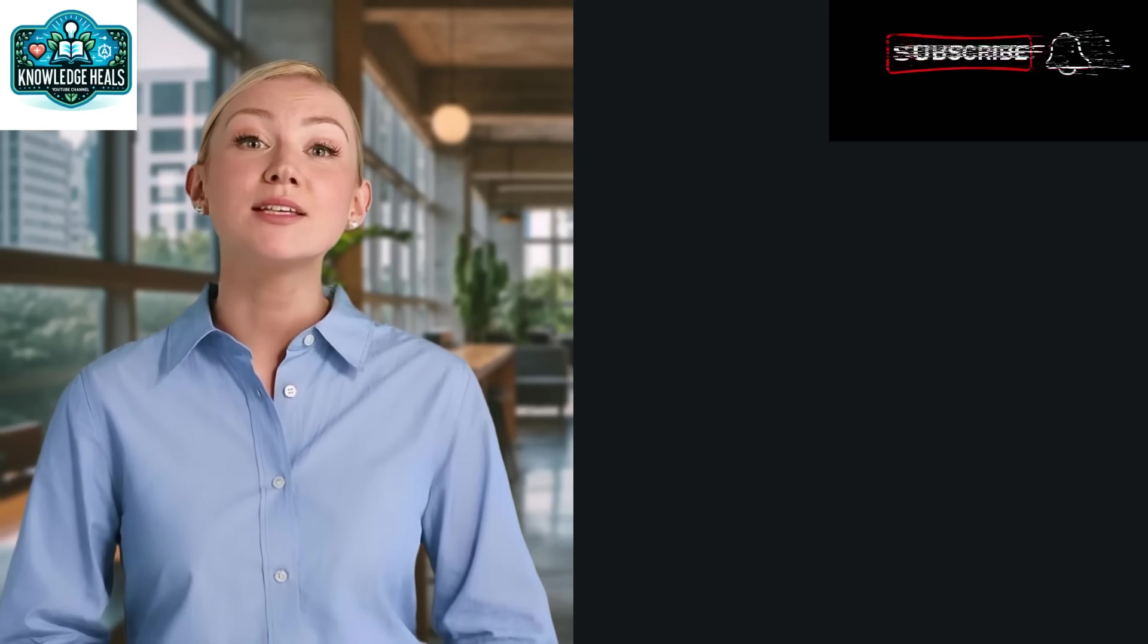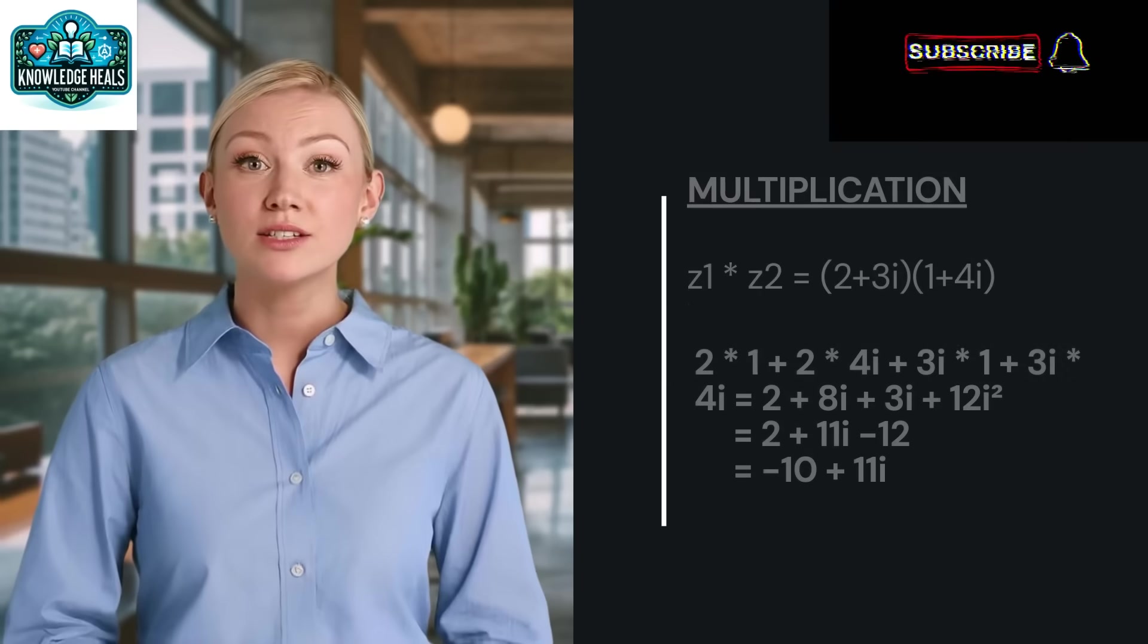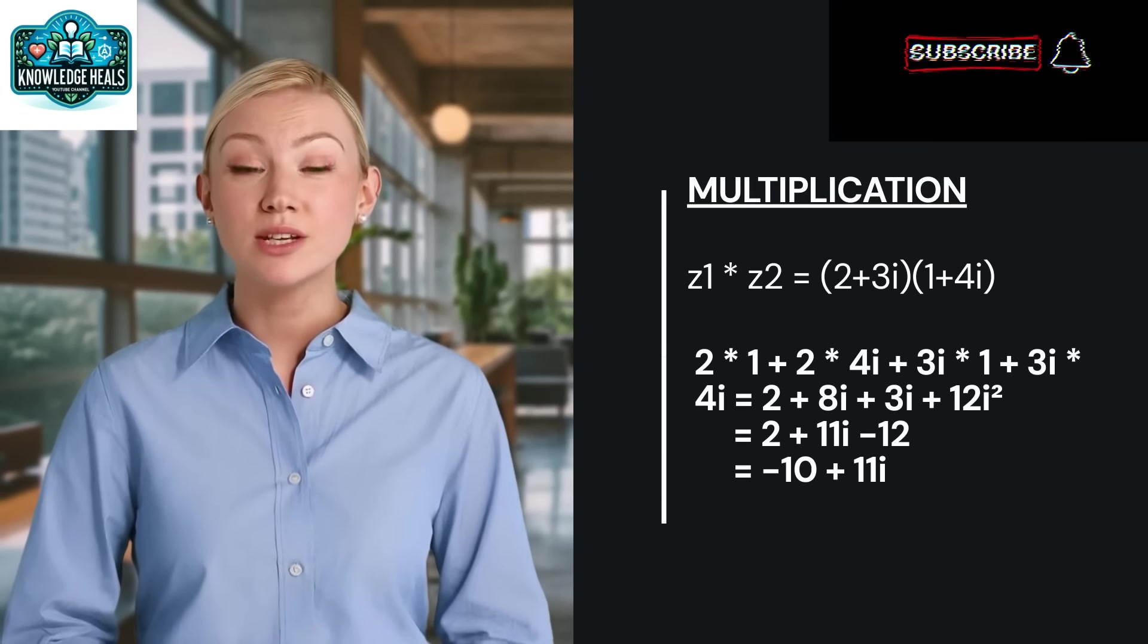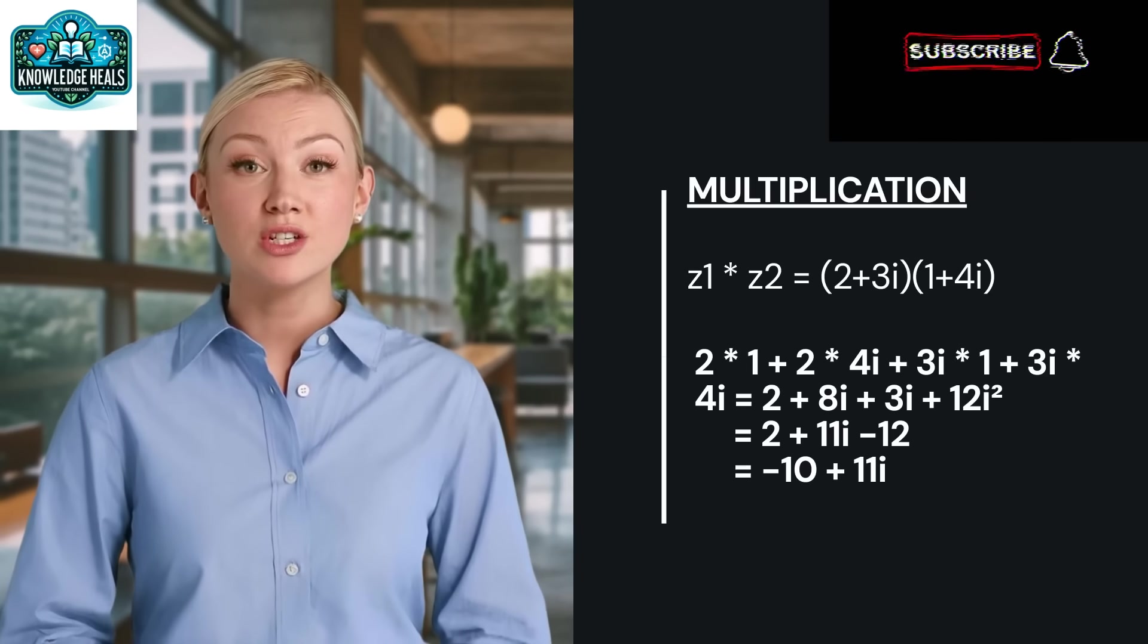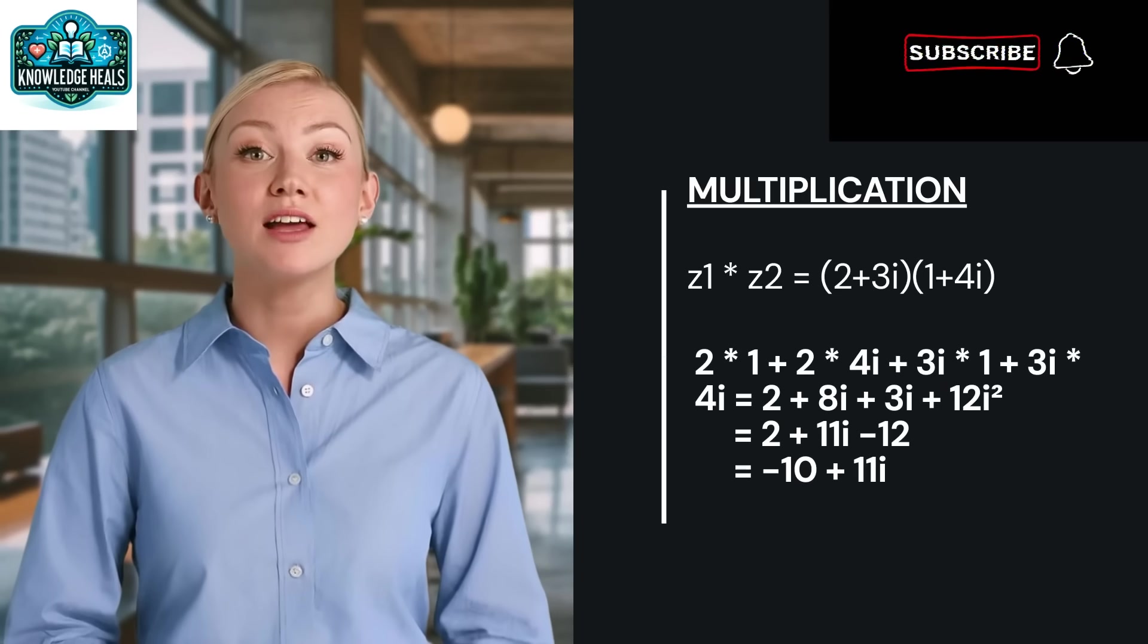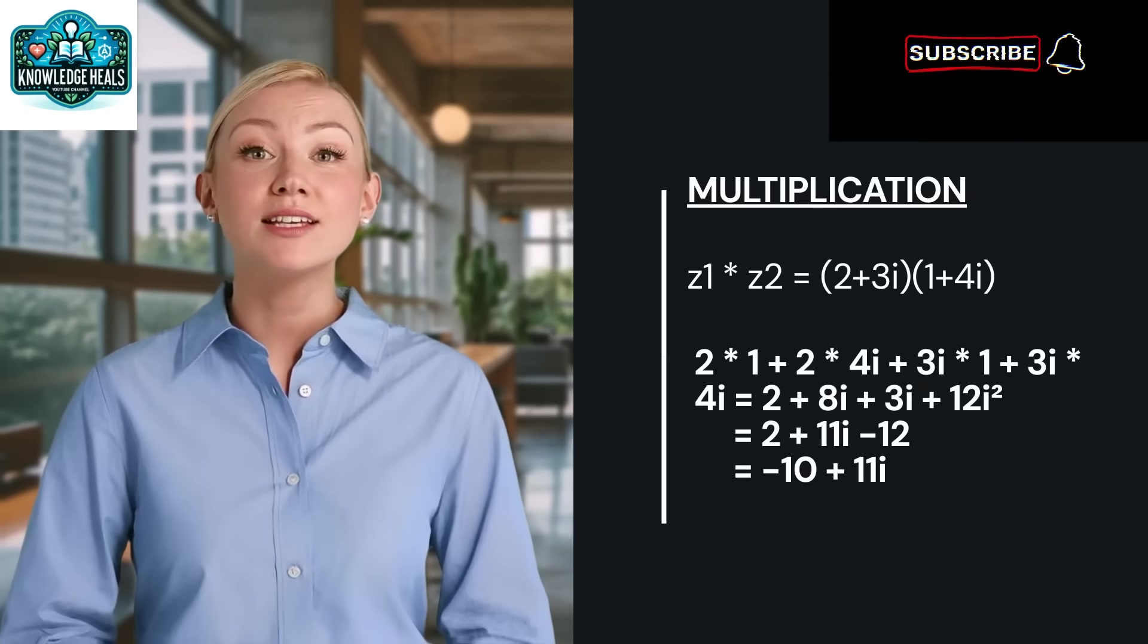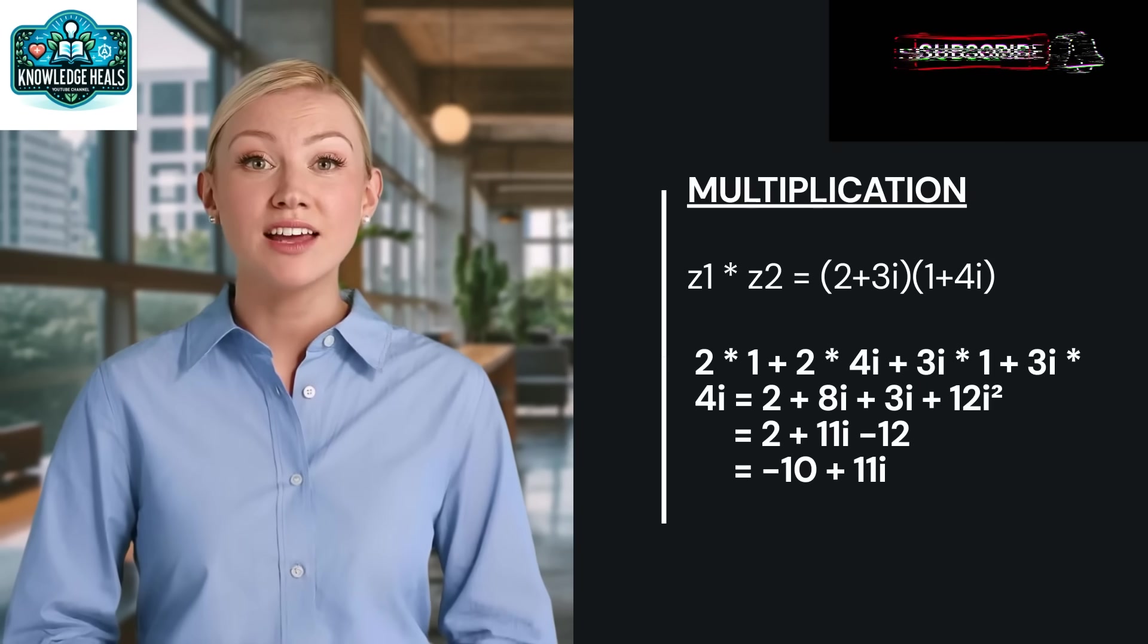Multiplication involves distributing each part of one complex number to each part of the other. Let's see how this works. Z1 multiplied by Z2 is equal to 2 plus 3I multiplied by 1 plus 4I. Expanding this, we get 2 multiplied by 1 plus 2 multiplied by 4I plus 3I multiplied by 1 plus 3I multiplied by 4I equal to 2 plus 8I plus 3I plus 12I squared. Equal to 2 plus 11I minus 12 because I square equal to minus 1, which is equal to minus 10 plus 11I.